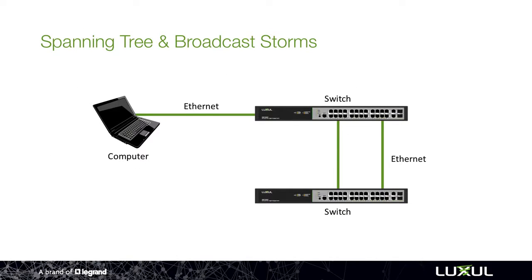To understand how this works, let's say that I've got a computer or a device on the network that's going to send out a broadcast message, and you have two switches in your network connected with an ethernet cable from one to the next. But then someone else comes along, doesn't realize your switch has already been connected, and plugs another ethernet cable in from one switch to the next. Now you have two connections between those switches and you essentially have a loop.